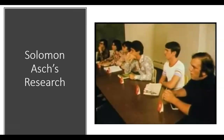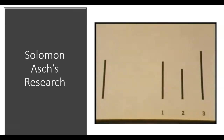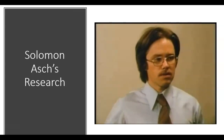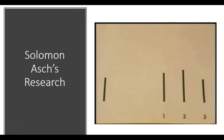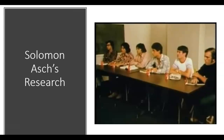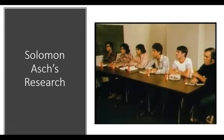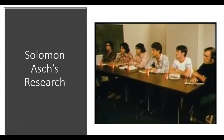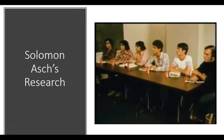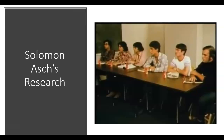The experiment involves the perception of the length of lines. On each card there are several lines. Your task is simple: look at the line on the left and determine which of the three lines on the right is equal to it in length. Only one person in the group is a real subject—the fifth person in the white t-shirt. The others are confederates of the experimenter and have been told to give wrong answers on some of the trials.